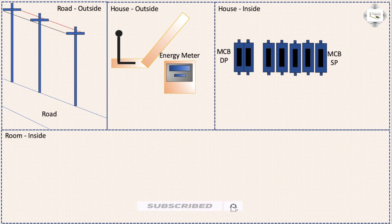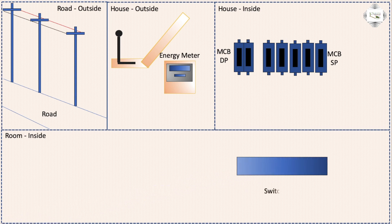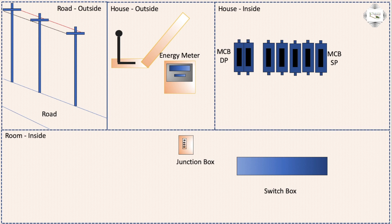Last step: room inside the connection — switchboard, electric light, electric fan, power socket. Room inside the connection: switch box connection, switch, dimmer, socket, or join box means neutral or phase connection.